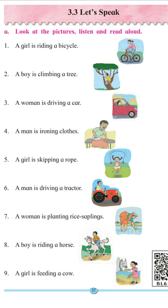Number 2. A boy is climbing a tree. What is the boy doing? The boy is climbing the tree. What action is happening here? Climbing. The boy is climbing, so the verb is climbing.